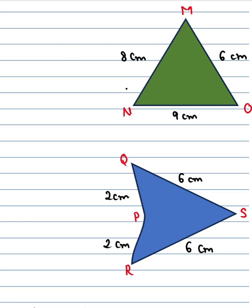So if we have to find the perimeter for this triangle MNO, then just add the sides. So what are the sides? MO plus ON plus NM. So MO is 6 cm,